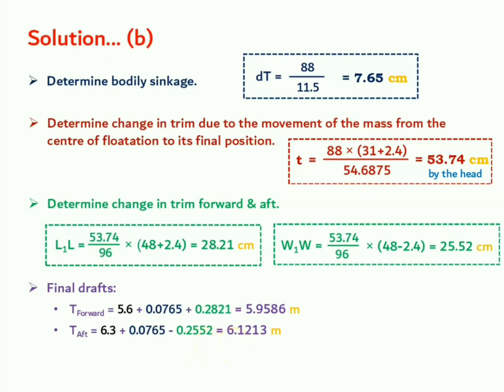One important note you should make out over here. We are supposed to keep units of all these figures same. The drafts have been expressed in meters, so it is good to have the values of change in trim forward and aft in meters only, and also the value of bodily sinkage. So this is how we can end up getting the final values of drafts in the forward as well as in the aft.